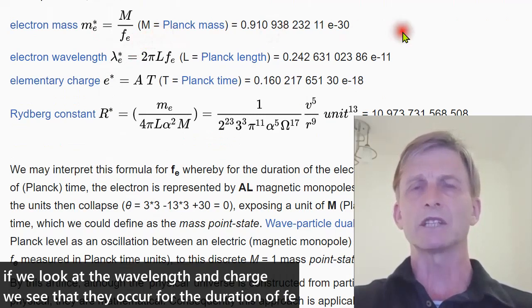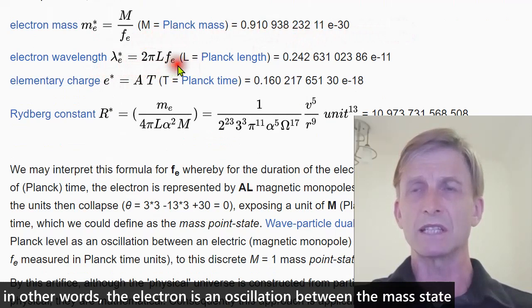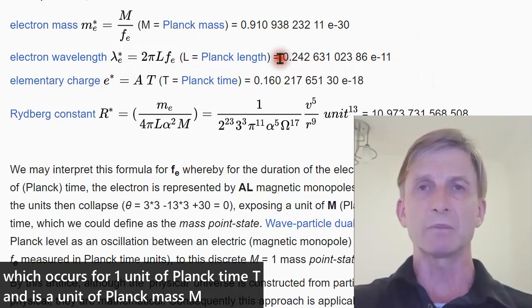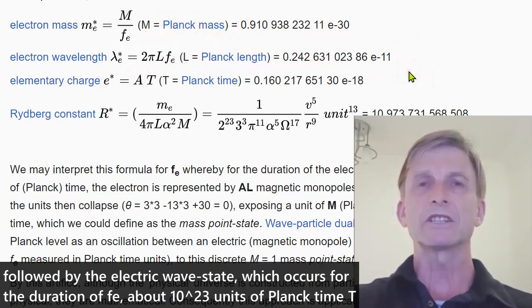If we look at wavelength and charge, we see that they occur for the duration of Fe. In other words, the electron is an oscillation between the mass state, which occurs for one unit of Planck time and as a unit of Planck mass, followed by the electric wave state, which occurs for the duration of Fe, about 10 to the 23 units of Planck time.